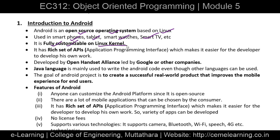Android is built on a Linux kernel and has a rich set of APIs — Application Programming Interfaces. It is led by the Open Handset Alliance, a group led by Google and other companies. Android code is written primarily in Java, though other languages can also be used.